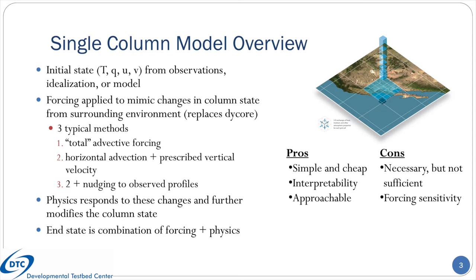For those unfamiliar with single column models in general, here's a quick overview of how one works. The initial state of the column comes from either observations, an idealization, or some higher dimensional model. Rather than a dynamical core advecting properties throughout the domain, forcing is specified to mimic how the column state is changed by a surrounding atmosphere. Although there are many ways to apply forcing in a single column model, it is often done in one of three ways.